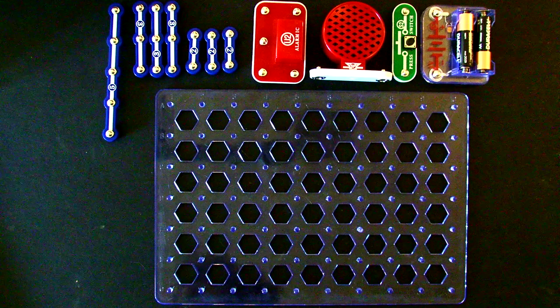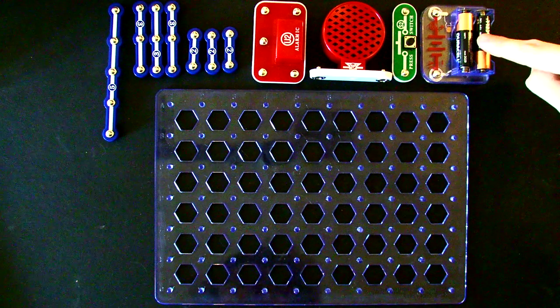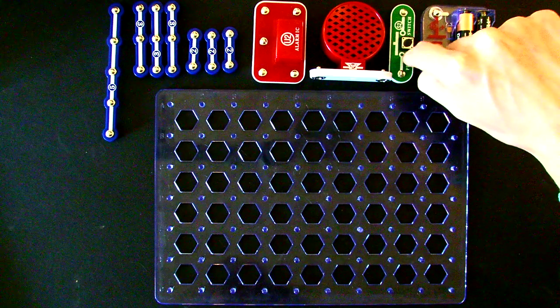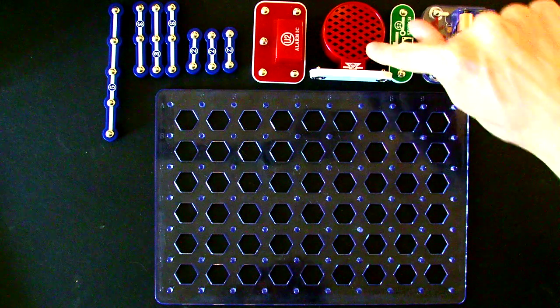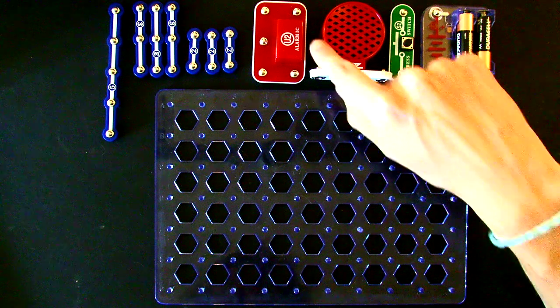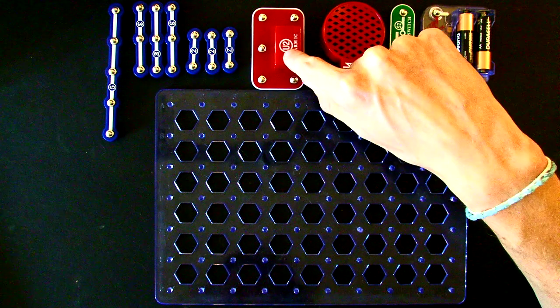Let's go ahead and get started. The components you need for this activity are a battery holder with two AA batteries, the green press switch labeled S2, the red speaker labeled SP, and the red integrated alarm circuit labeled part U2.